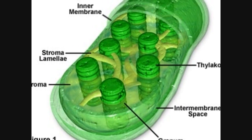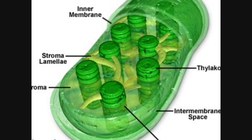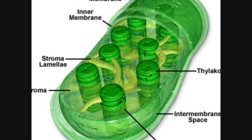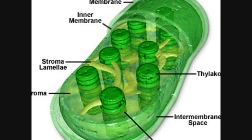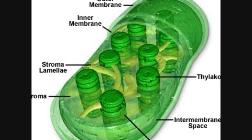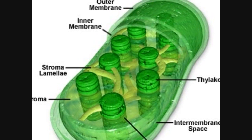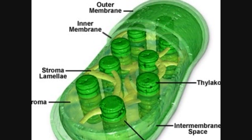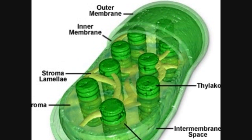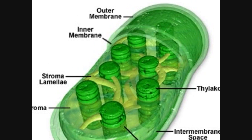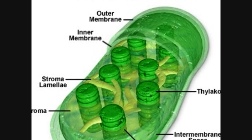Chloroplast is the powerhouse of the plant cell. Chlorophyll pigments give plants their green color. This is the site of photosynthesis.